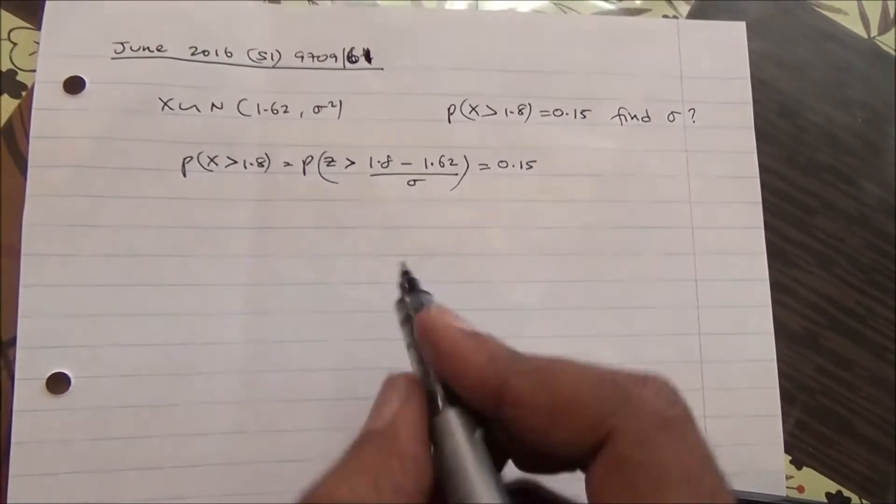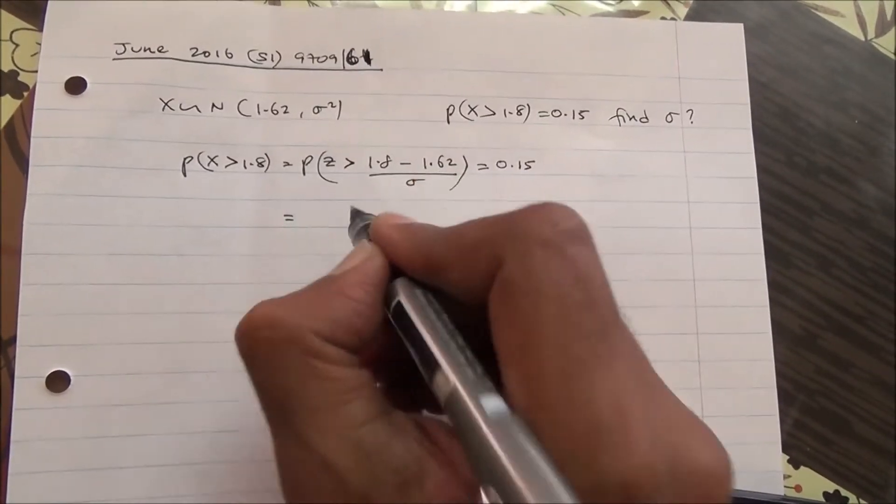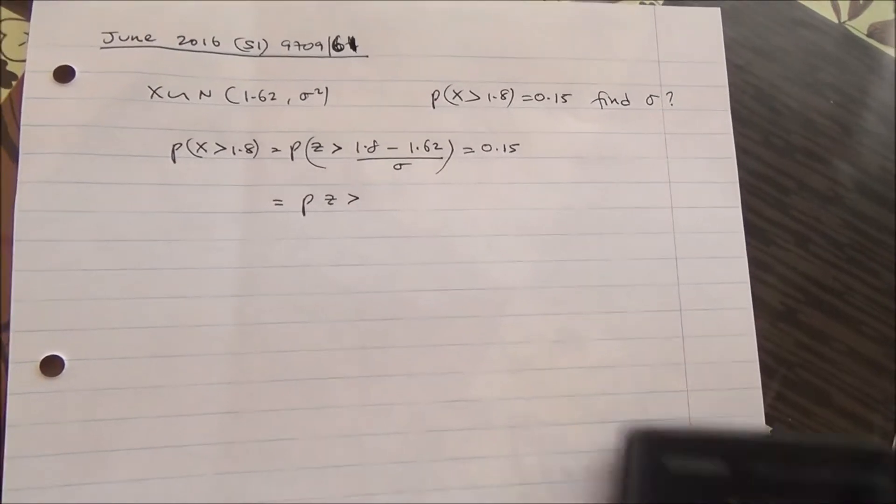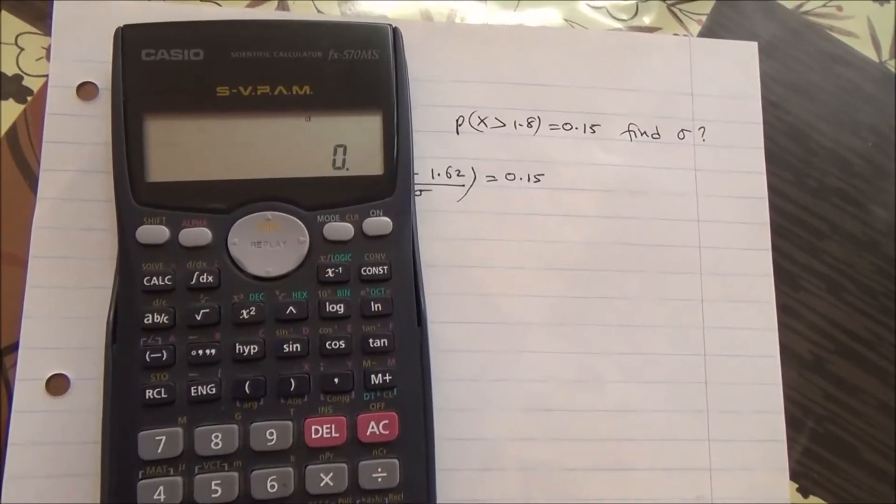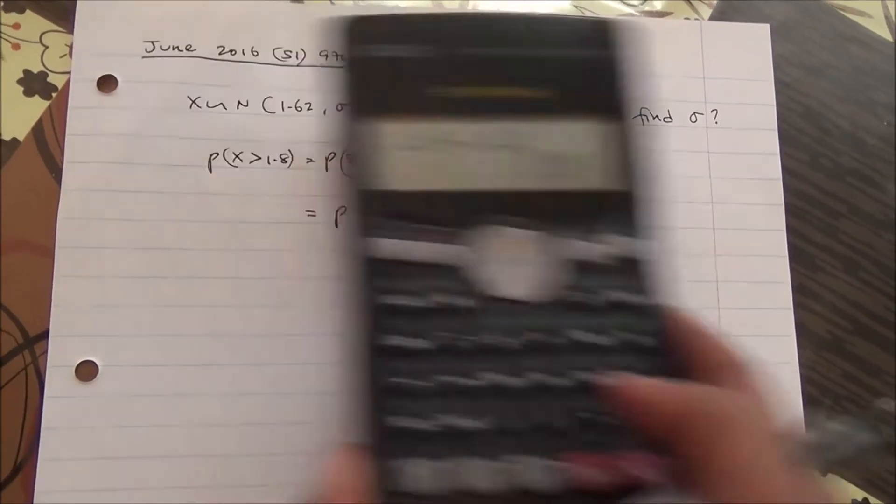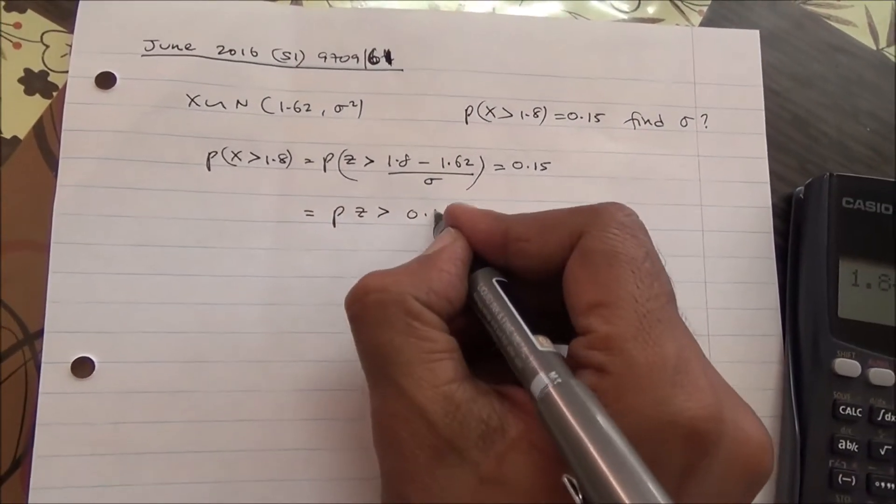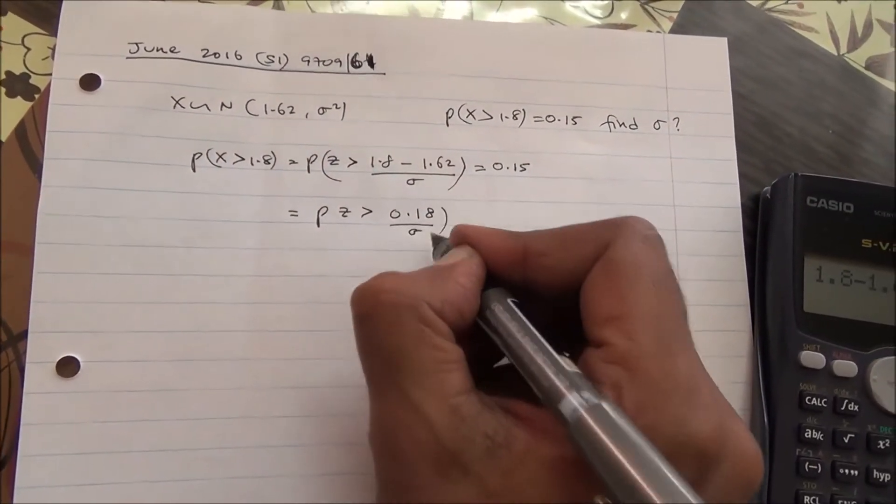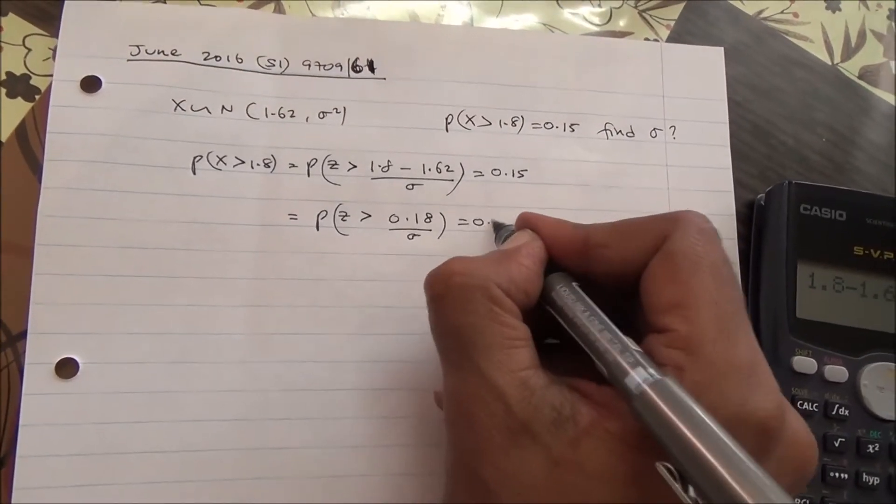Now from here, this is probability of Z being greater than, let us do 1.8 minus 1.62, 0.18. So greater than 0.18 over the sigma, and all of that's going to give us 0.15.